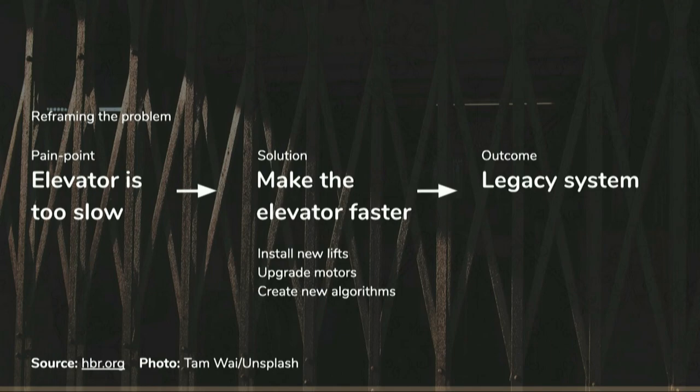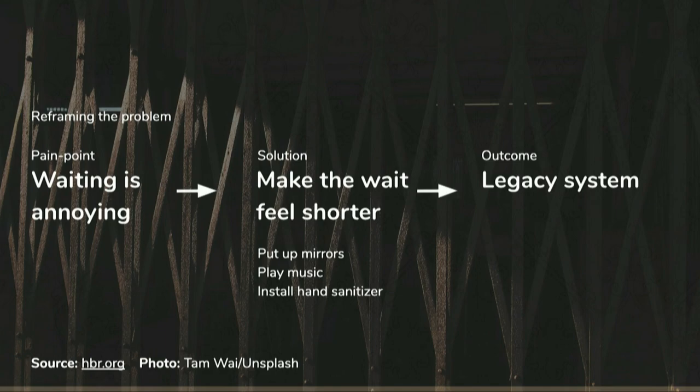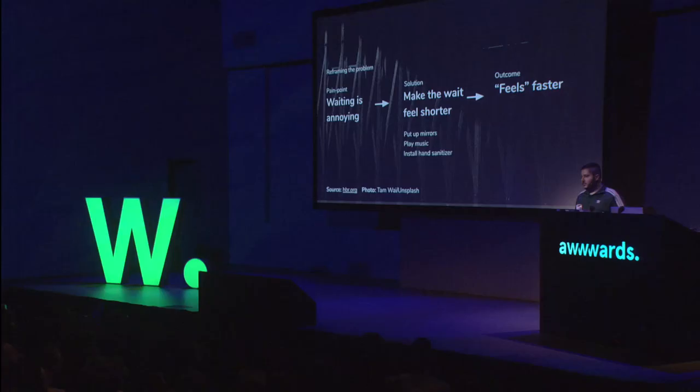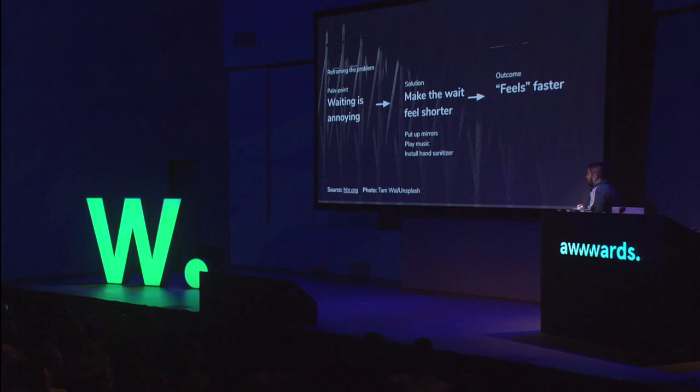So again, you reframe the problem. It's not so much that the elevator's too slow — it's the waiting that's annoying. So building managers will put up mirrors, play music, and install a hand sanitizer. And magically, it feels faster. In the talk, I'm going to give some UX examples of the equivalents you can actually do. This is usually the first step for anyone who wants to build for speed.